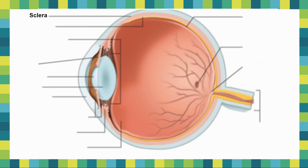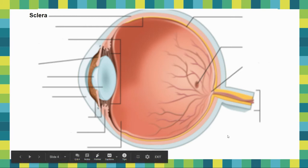We're going to start at the very top. I'm going to talk about each function as we go along afterwards, so right now it's just about labeling it and probably saying the words out loud so you know what they sound like. The first one is the sclera — it's actually pointing to the white part of your eye, the white outer layer.